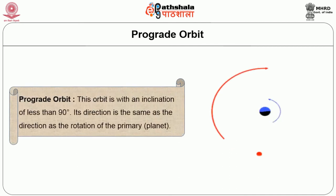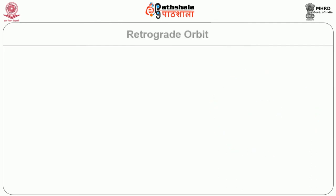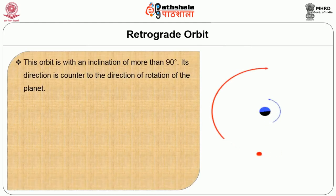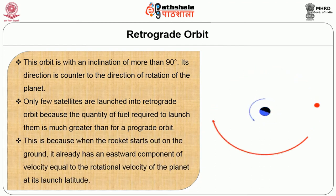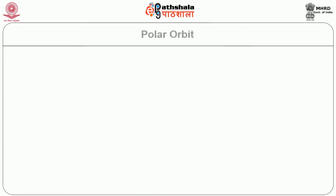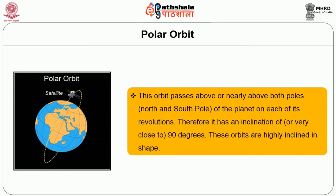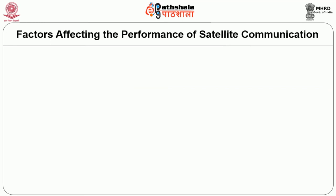Prograde Orbit has an inclination of less than 90 degrees and its direction is the same as the direction of rotation of the planet. Retrograde Orbit has an inclination of more than 90 degrees and its direction is counter to the direction of rotation of the planet. Only few satellites are launched into retrograde orbit because the quantity of fuel required is much greater than for a prograde orbit — this is because when the rocket starts from the ground, it already has an eastward component of velocity equal to the rotational velocity of the planet at its launch latitude. Polar Orbit passes above or nearly above both north and south poles on each revolution, and therefore has an inclination of 90 degrees. These orbits are highly inclined in shape.